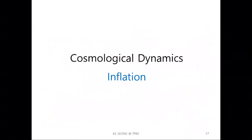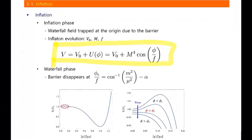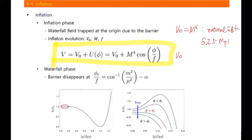Now let us move on to the cosmological dynamics. During inflation, the barrier traps the waterfall field at the origin, and then the inflaton potential looks identical to natural hybrid inflation. If M = 0, this corresponds to natural inflation, where the axion decay constant must be larger than the Planck scale — at least five times larger. In natural hybrid inflation, M is much smaller than the constant term V₀, and in this case F can be much smaller than the Planck scale.